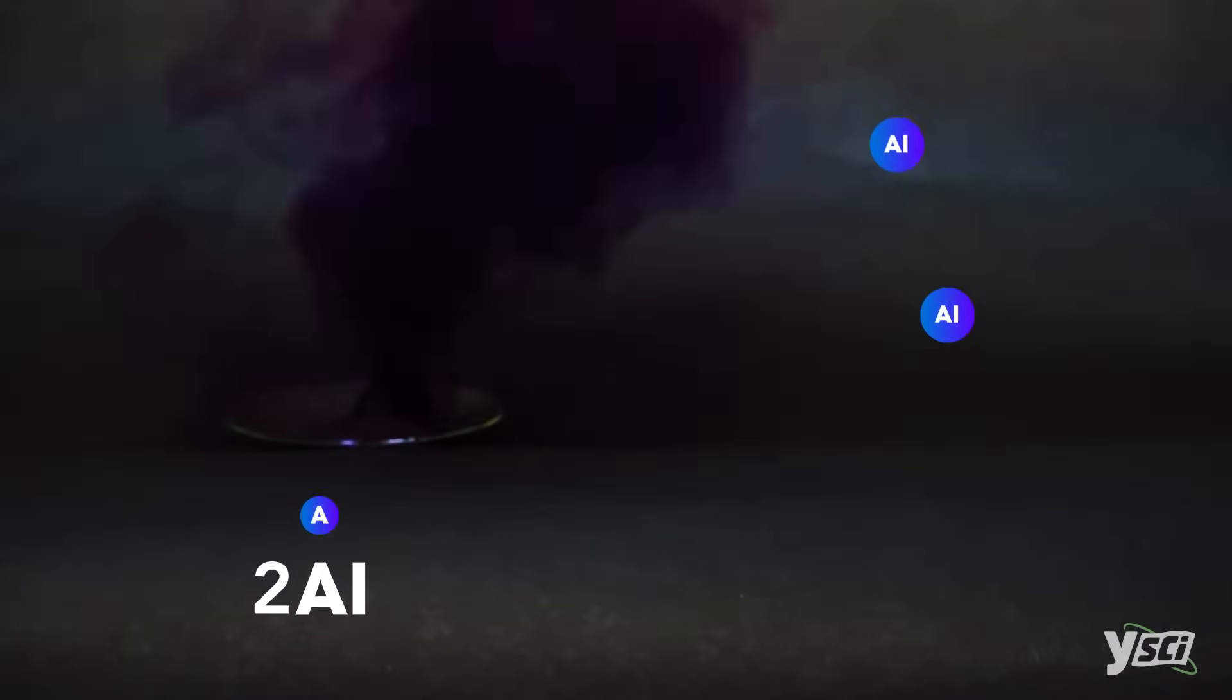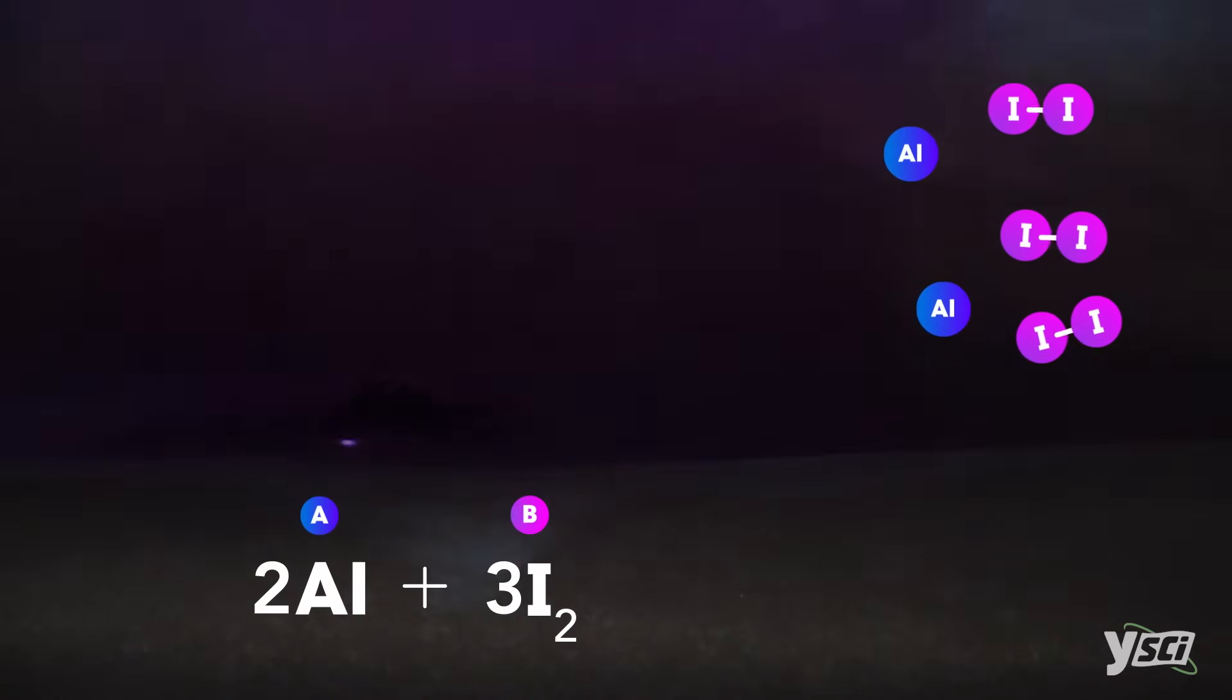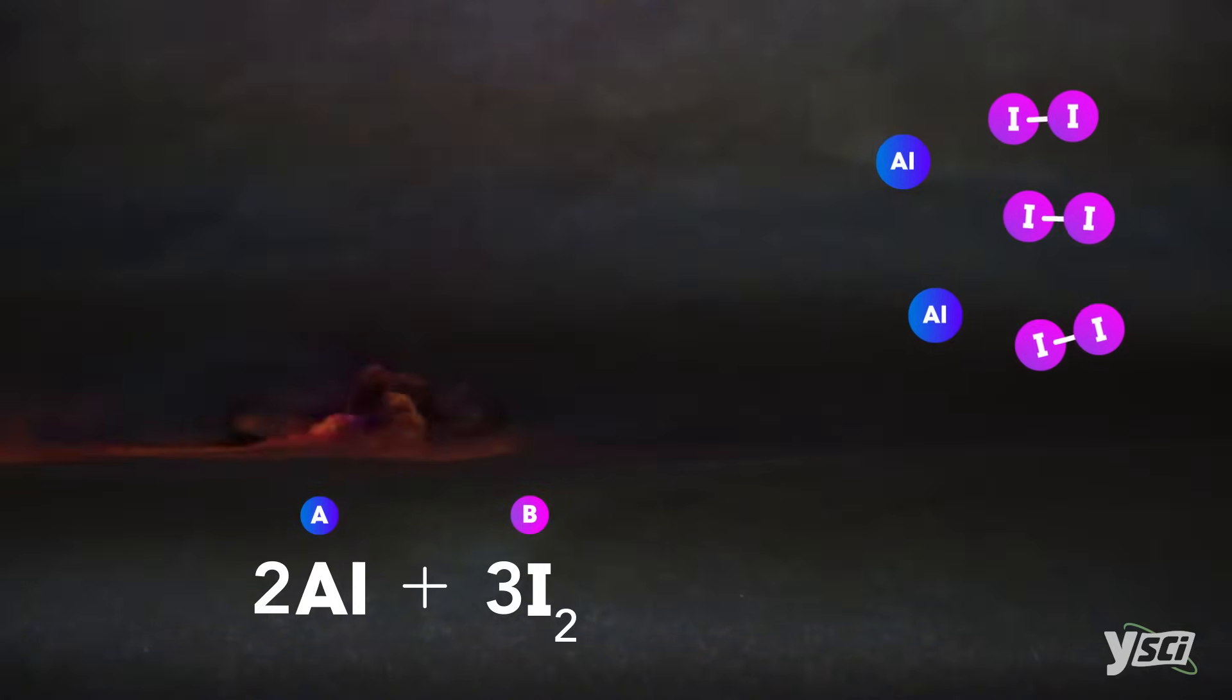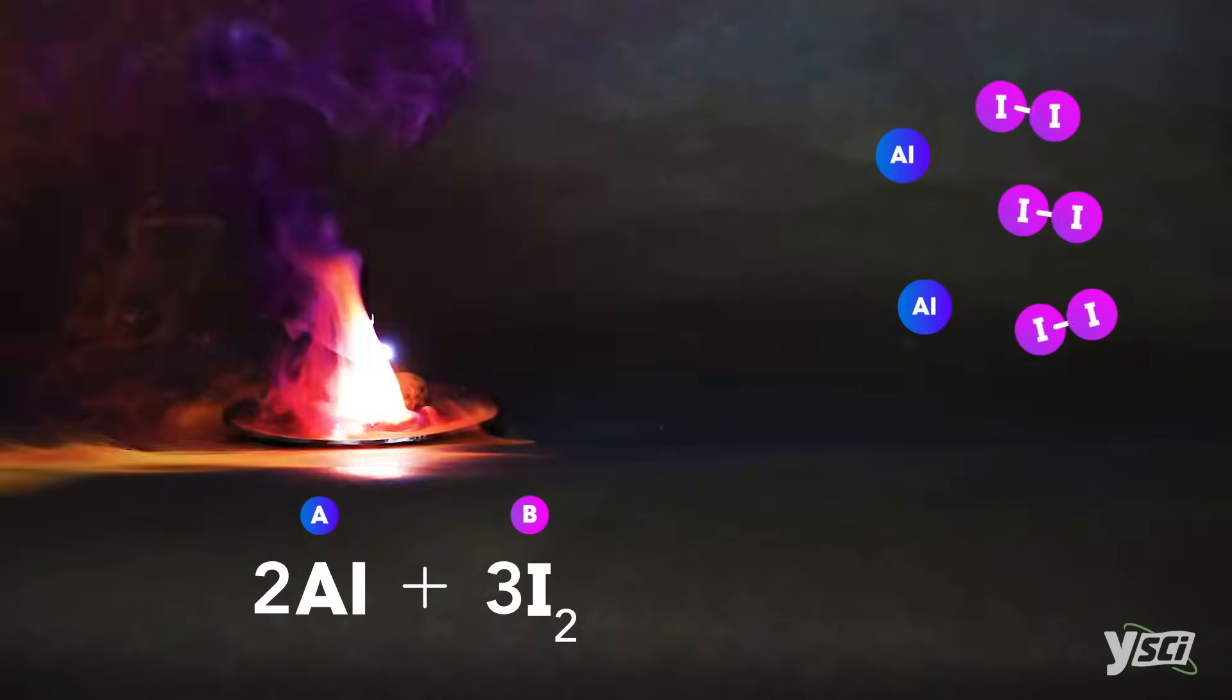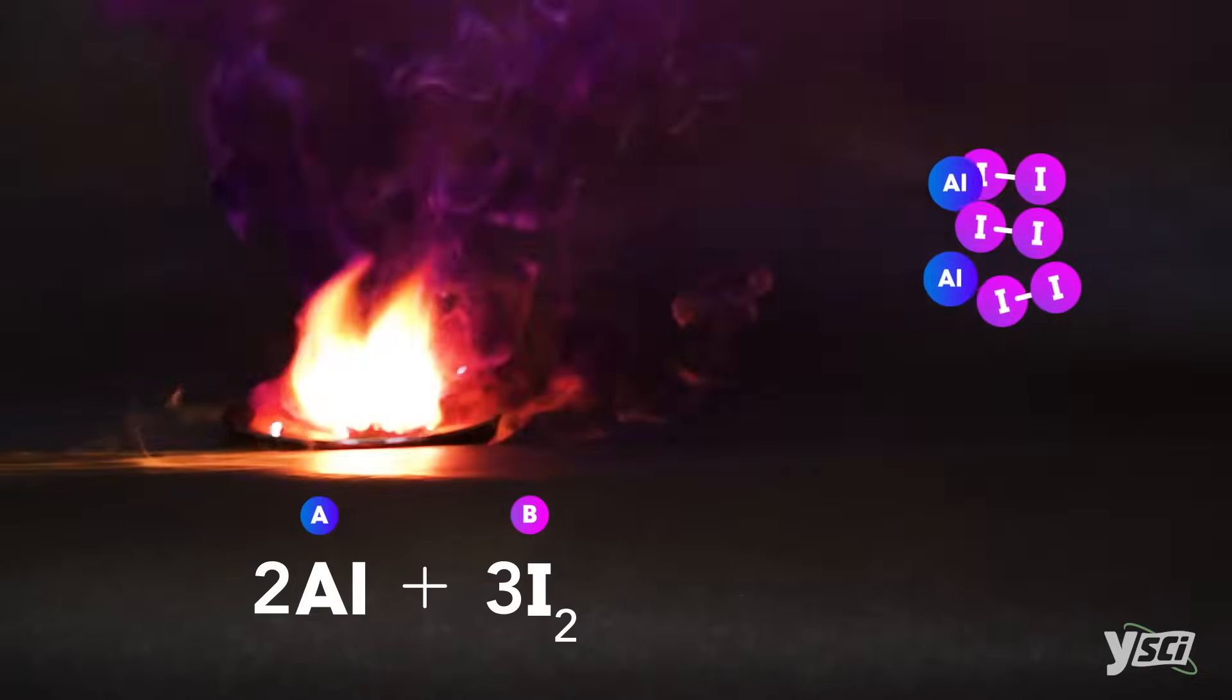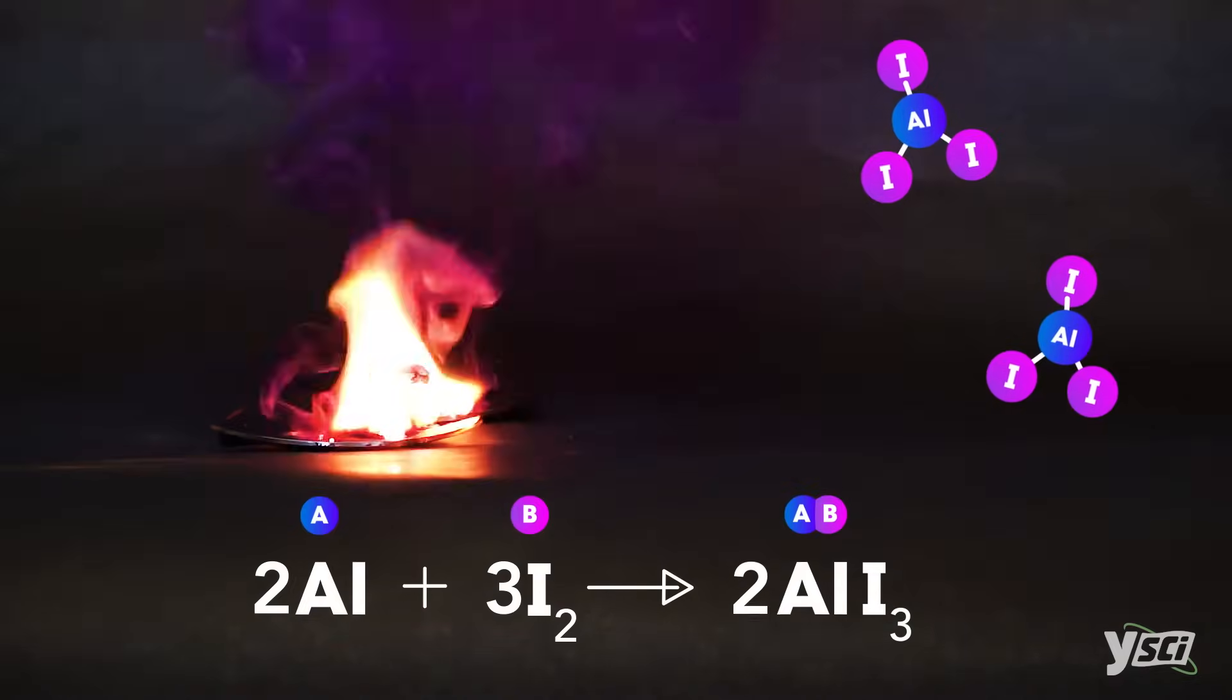Here, aluminum is mixed with iodine. Aluminum is covered with an oxide layer, which protects it from constantly reacting. However, a little water removes that protective layer and enables the reaction to take place. Initially, you see the purple iodine gas released, then aluminum sparks, and finally a product, aluminum iodide.